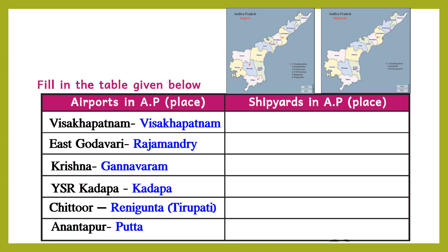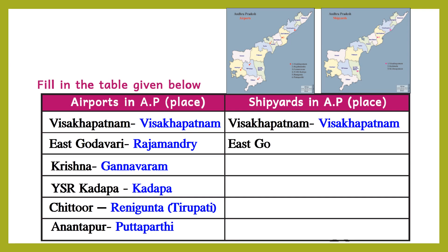In Anantapur district, Puttaparthi airport is there. Similarly, Visakhapatnam has a natural shipyard, also known as Visakhapatnam shipyard. In East Godavari district, Kakinada shipyard is there, and in Nellore district, Krishnapatnam shipyard is there.